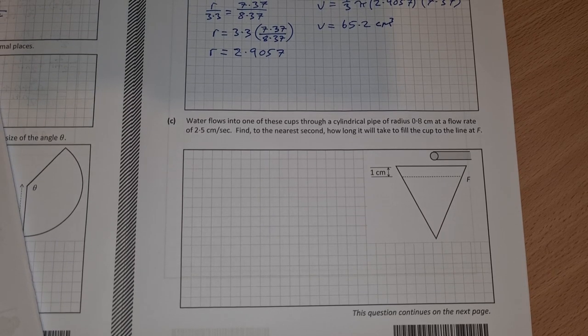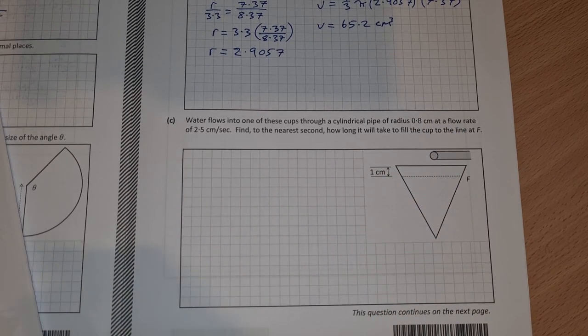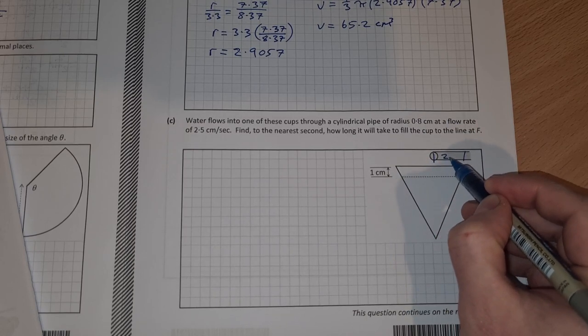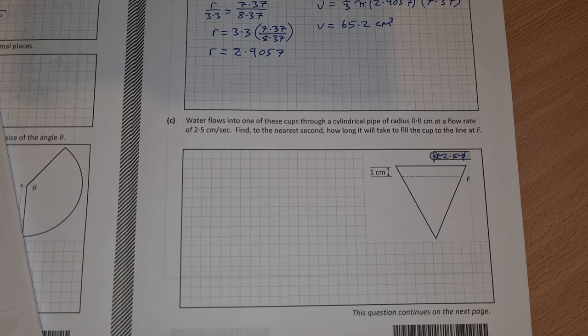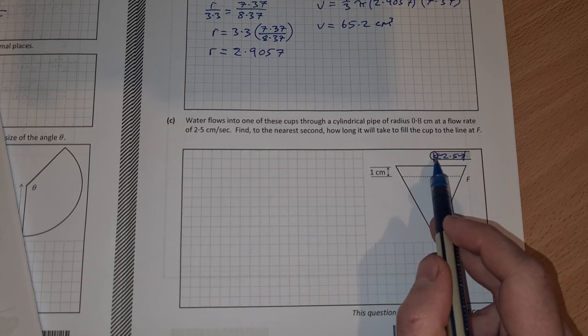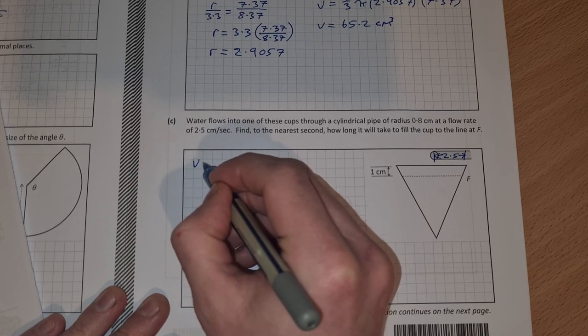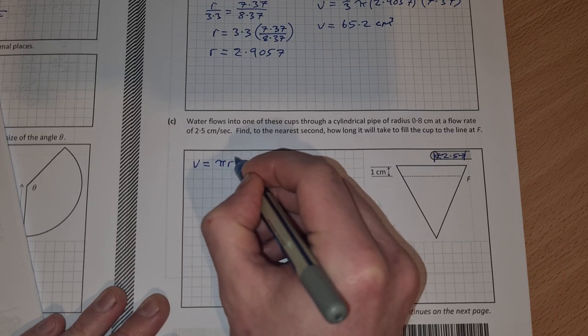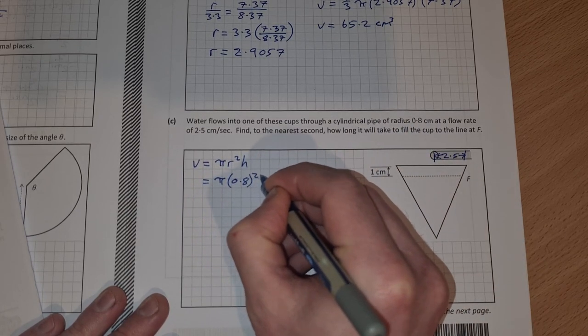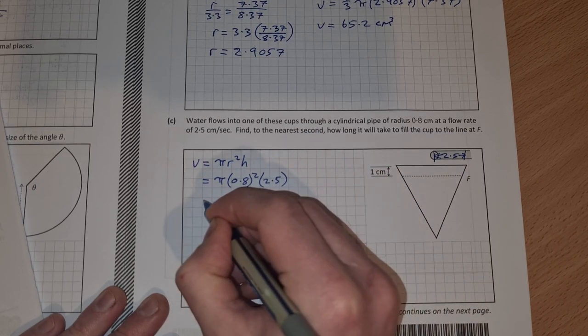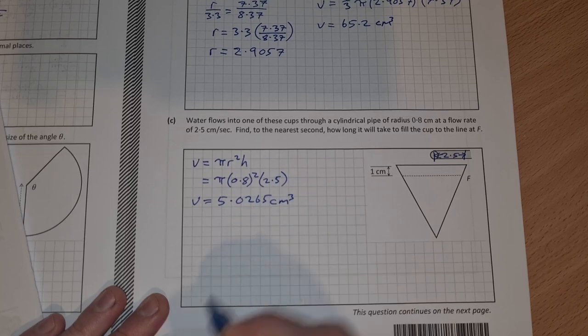Part C. Water flows into one of these cups through a cylindrical pipe radius 0.8 centimeters at a flow rate of 2.5 centimeters per second. That means 2.5 centimeters goes in every second. Find to the nearest second how long it takes to fill the cup to line f. We need to find out how much water is in 2.5 centimeters of this pipe. It has a radius of 0.8, so the volume of water going in every second is πr²h. That's π times the radius 0.8 squared and the h is 2.5.